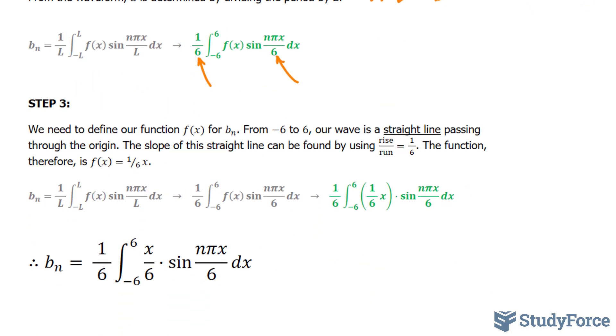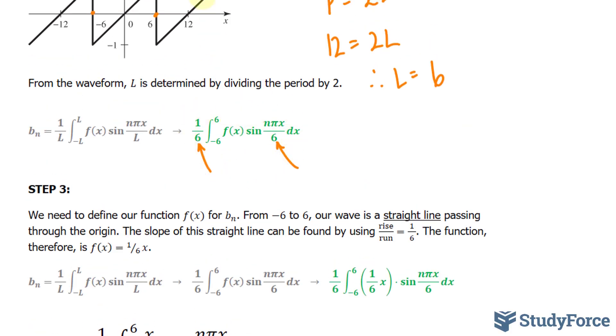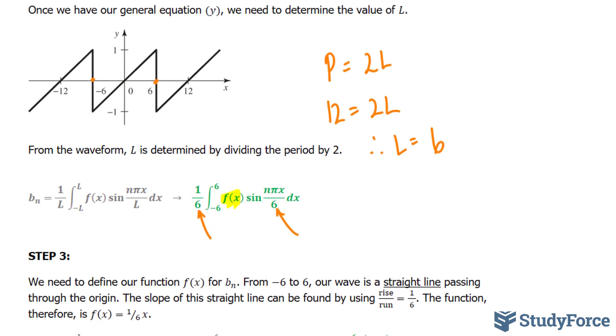In step number 3, we need to define our function f of x for b sub n. So take a look at this general formula. That's f of x. We still don't know what that is. So let's go back and look at this wave. From negative 6 to 6, from here to here, our wave is a straight line passing through the origin. And a straight line can be represented as y is equal to mx plus b, where m is the slope and b is the y-intercept. Since it's passing through the origin, b is 0.